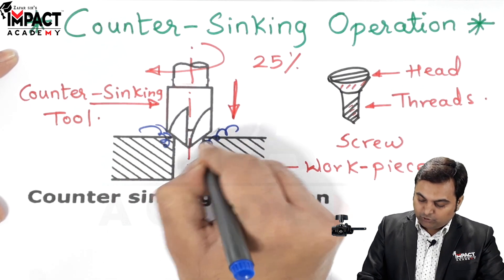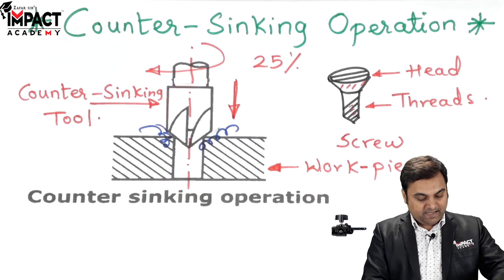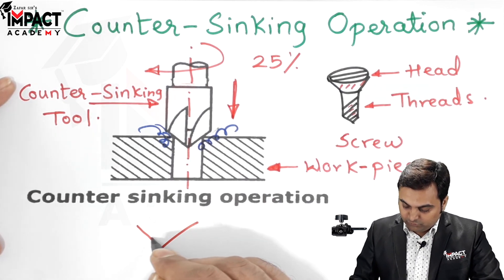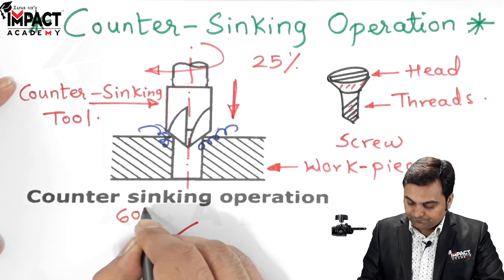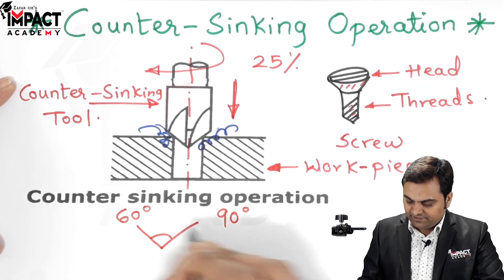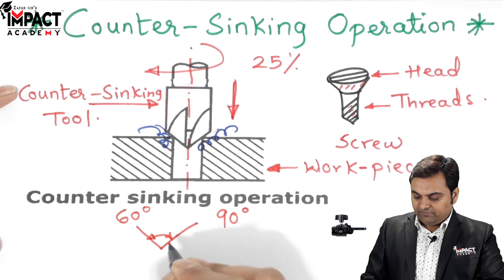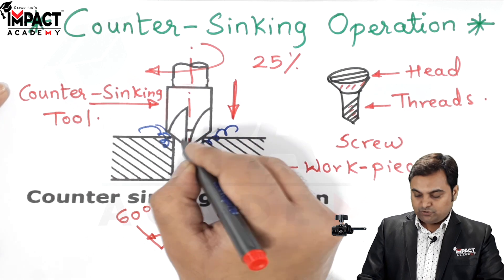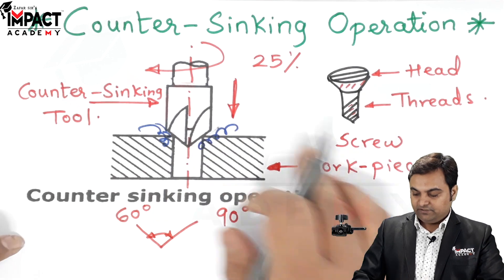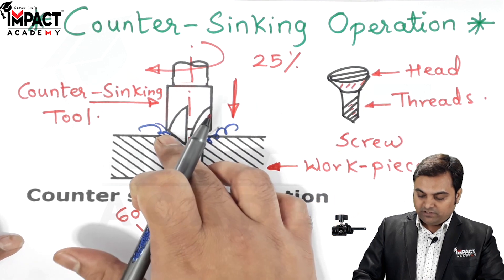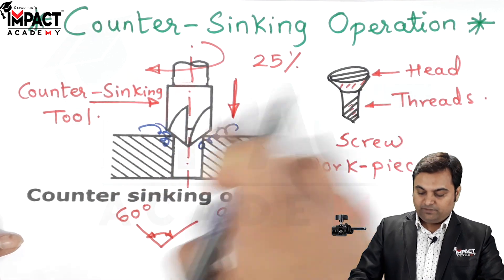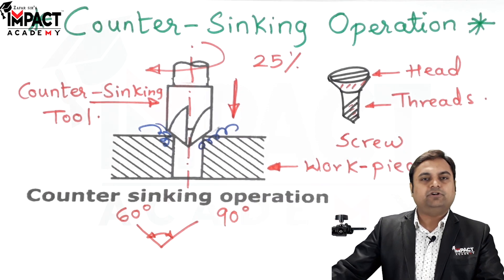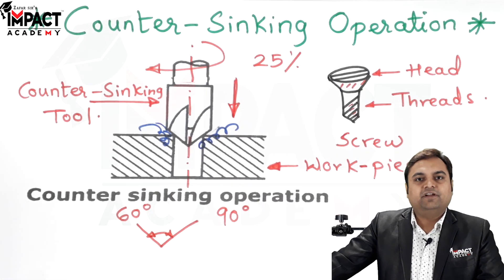The material gets removed in the form of small chips, and we get a conical surface at the top. This included angle may be either 60 degrees, 90 degrees, or whatever angle we require — at that same angle the countersinking tool should also be inclined. Once the countersink has been produced, we can put the screw inside the workpiece. In short, that was an explanation regarding the countersinking operation.